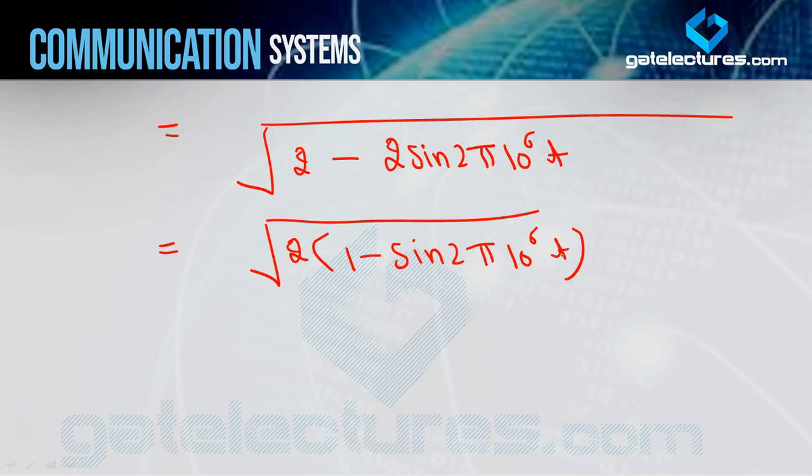So in this question we used a balanced modulator, a high pass filter, and calculated the envelope at the end. These three questions are very important for concept clarity on DSBSC. We will continue solving more such questions going forward. If you have any doubts about any of these questions, please post in the comment section. Thank you.